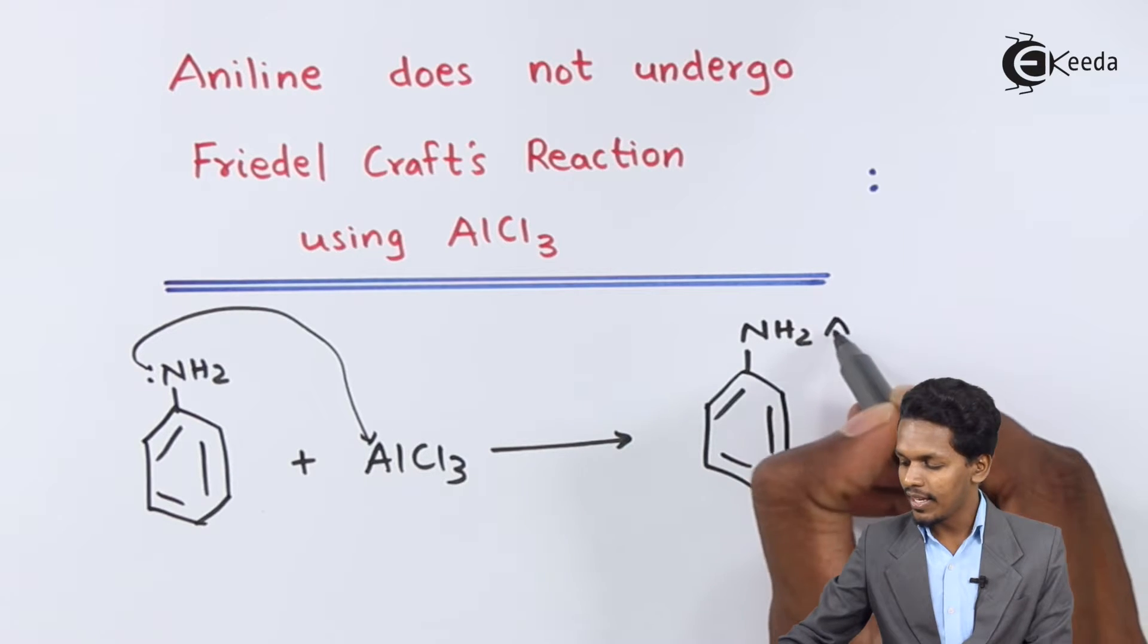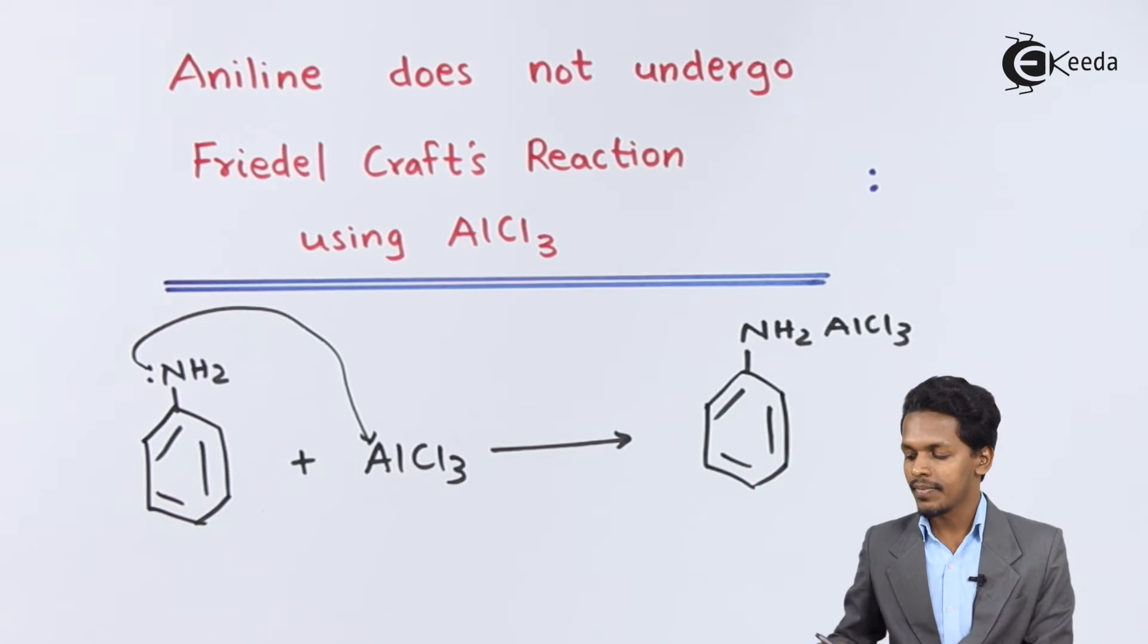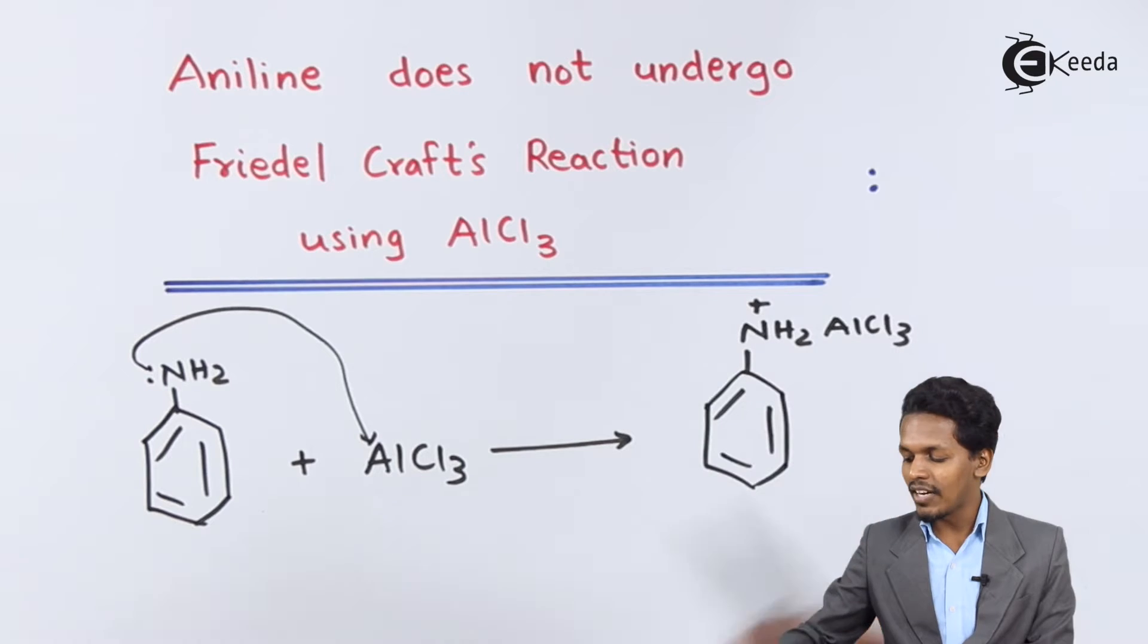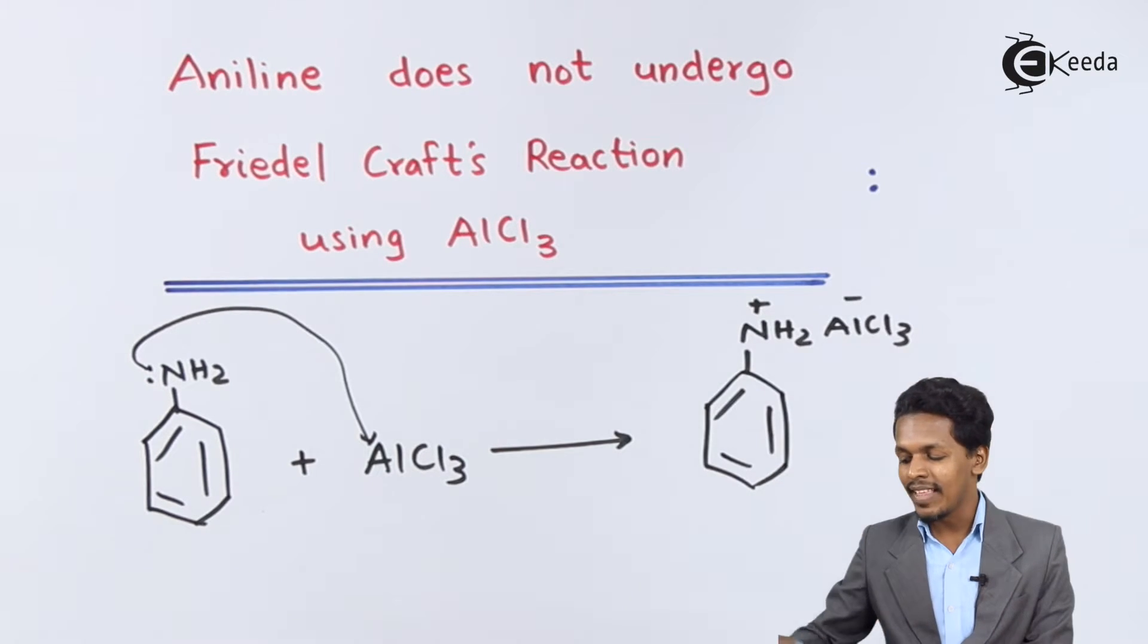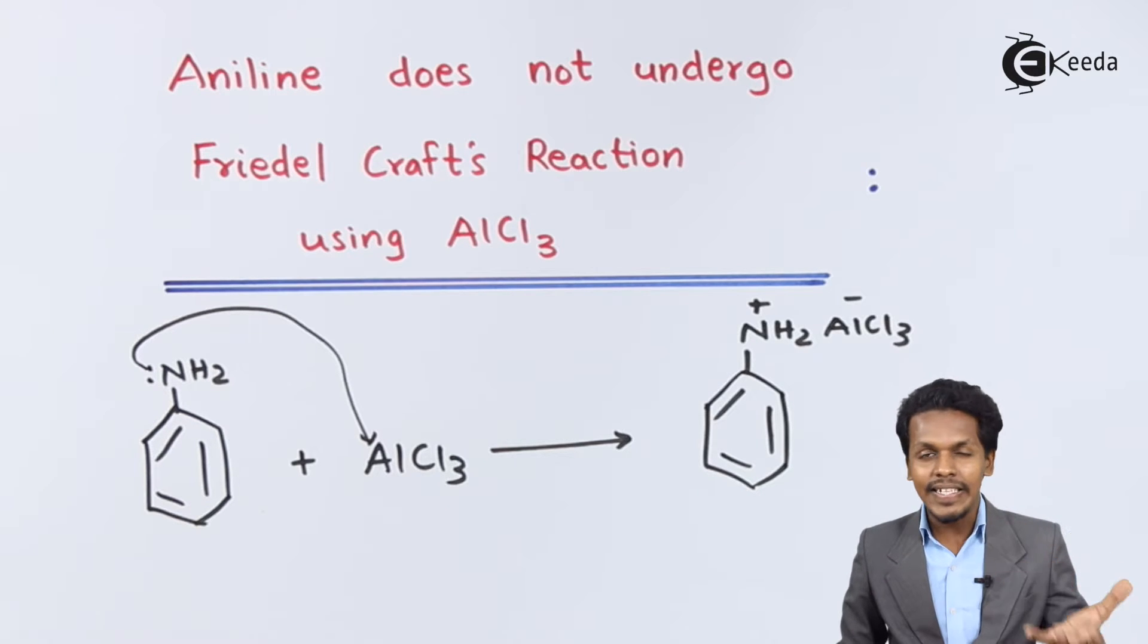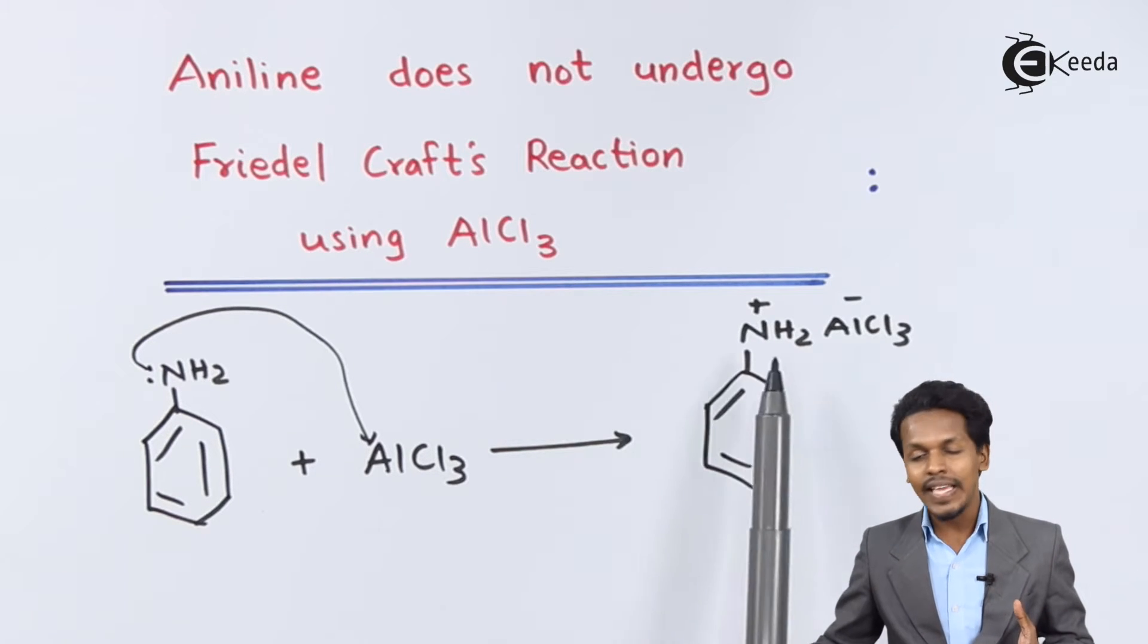This one will be converted into NH2 AlCl3. This is a salt formation that would take place while acquiring the positive charge on the nitrogen atom. This will act as a very deactivating group.